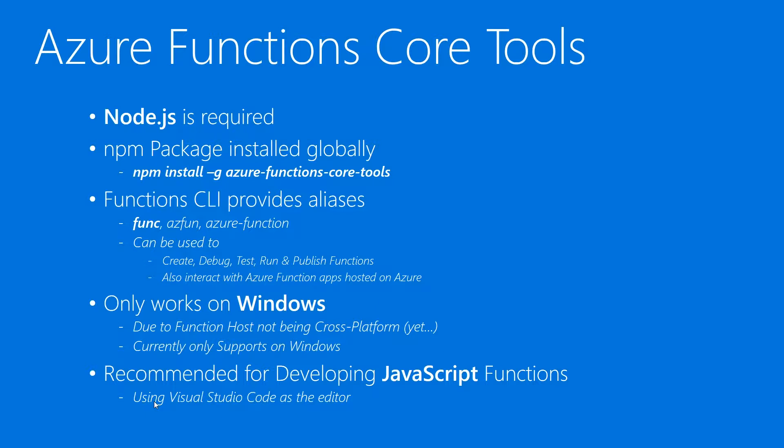Installing this package will provide the Azure Functions CLI, and you can use this CLI to create, debug and test Azure Functions locally. You can interact with the Azure portal and publish the functions directly from your local development environment as well. This CLI provides three aliases to access the CLI, and using it you can interact with Azure Function apps created on the Azure portal, pulling down configuration settings, interacting with storage accounts, and publishing the application to Azure.